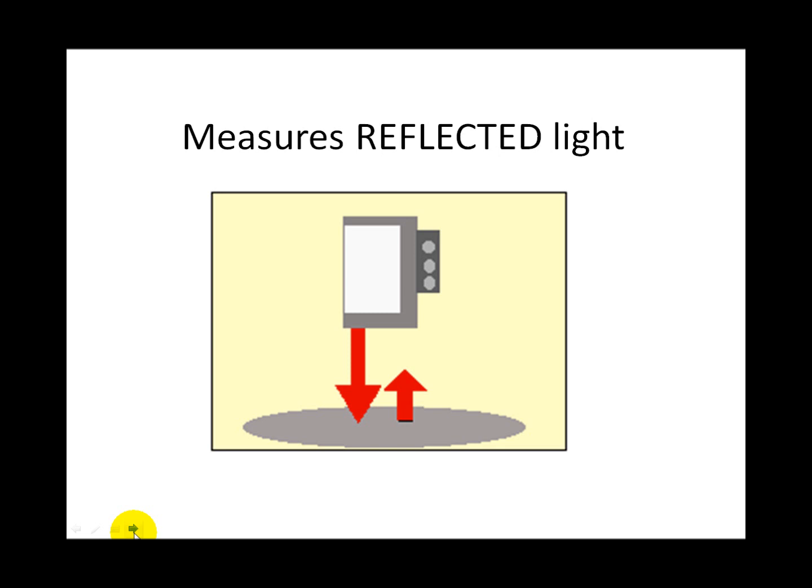The light sensor can generate its own light. Part of the light is reflected back to the sensor and the sensor measures this reflected light.